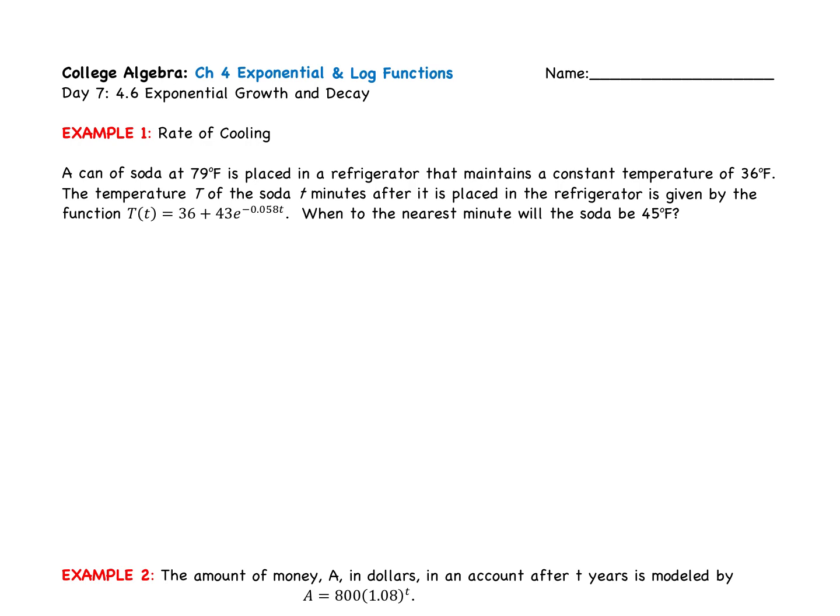First example has to do with what is called Newton's rate of cooling. A can of soda at 79 degrees is placed in a refrigerator that maintains a constant temperature of 36 degrees Fahrenheit. The temperature T of the soda, T minutes after it is placed in the refrigerator, is given by that function. When to the nearest minute will the soda be 45 degrees?